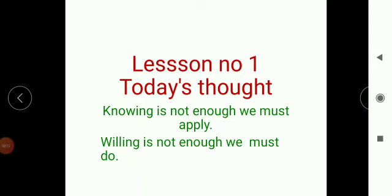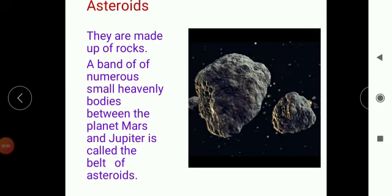Today we are learning about asteroids. As you can see here, asteroids are nothing but small and big pieces of rocks — they are made up of rocks. You see a band or belt of numerous such heavenly bodies, that is asteroids, specifically between the planets Mars and Jupiter.